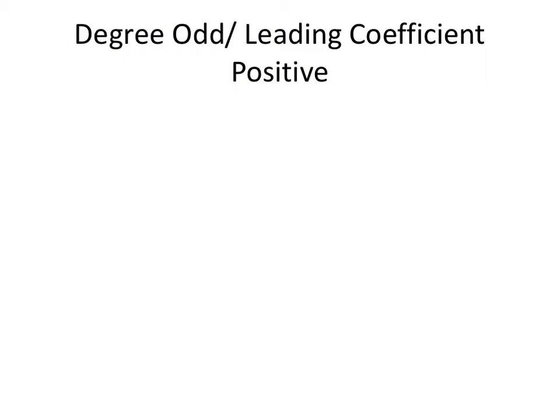In studying the behavior of polynomial functions, the most important thing is the degree — is the degree odd or even? An odd degree means the highest power is something like 3 or 5, or even x to the power of 1. You just look at every polynomial and check the highest power — that's what we call the degree.